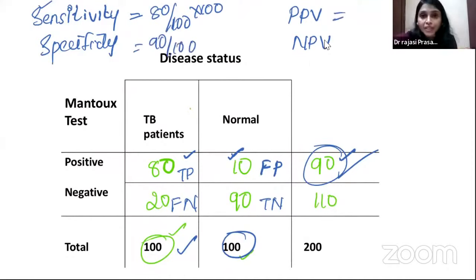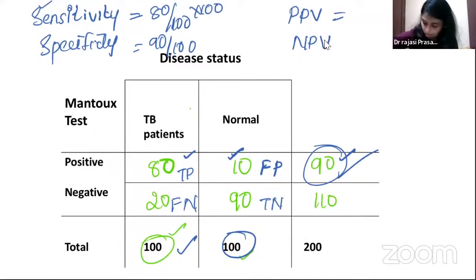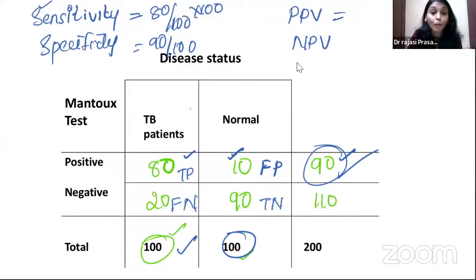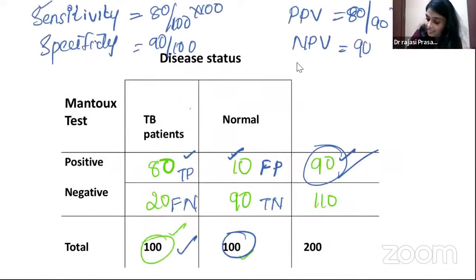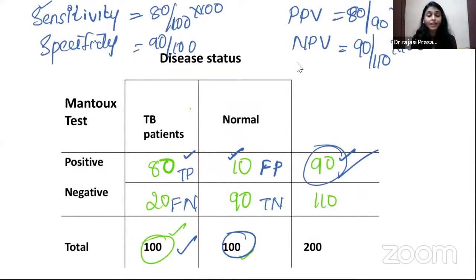Positive predictive value is 80 divided by 90, and negative predictive value is 90 divided by 110. In terms of the 2x2 table labels A, B, C, D: sensitivity = A/(A+C), specificity = D/(B+D), PPV = A/(A+B), NPV = D/(C+D).